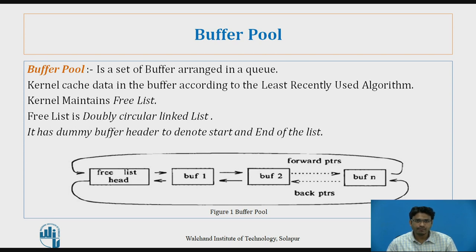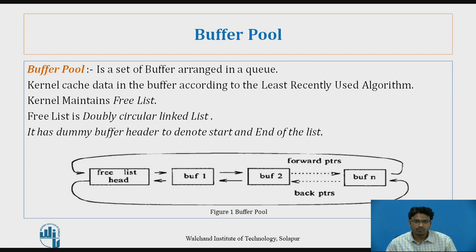In the buffer pool we will have buffer 1, buffer 2, buffer 3, up to buffer n. Each buffer in this diagram will have 2 pointers: a forward pointer and a backward pointer. It is a doubly circular linked list, meaning the forward pointer points to its next buffer and the previous pointer points to its previous buffer. In this way, the buffer pool will be created.